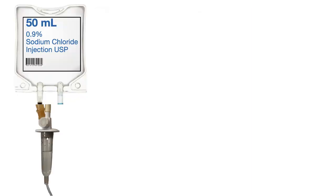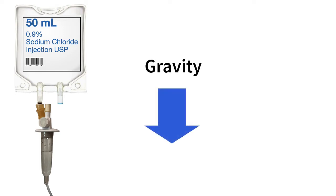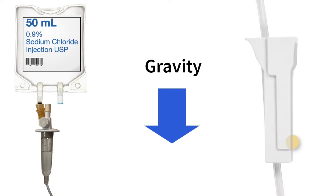Another type of infusion is one in which electricity is not required to infuse the fluid into the patient. Instead of being regulated by a pump, these infusions use the force of gravity. A clamp on the tubing is used to manually adjust the speed in the chamber.